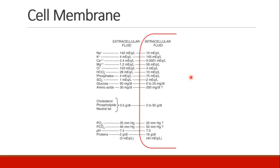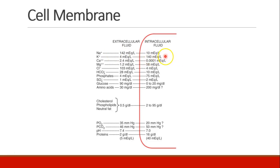This diagram, reproduced in your notes, shows common normal values of concentration of different ions and substances in the extracellular and intracellular fluid. We can appreciate that most of the sodium is in the extracellular fluid, whereas most of the potassium is in the intracellular fluid. We can see the same for calcium, magnesium, and other substances, and that the relative pHs differ — the inside of a cell is a little more acidic than the outside.